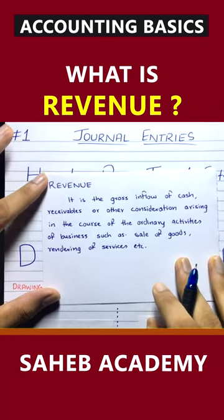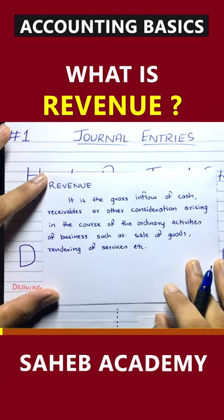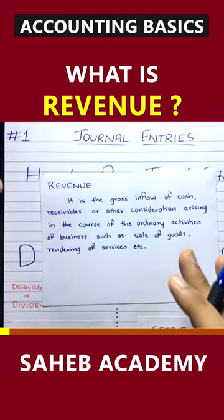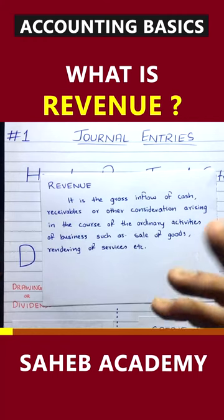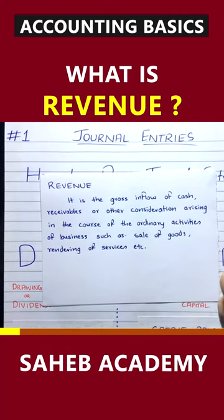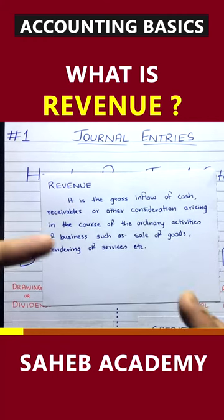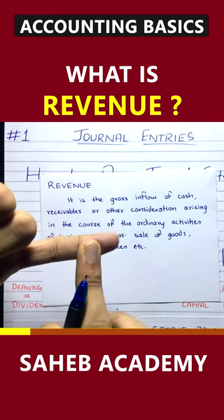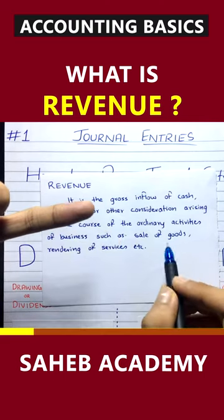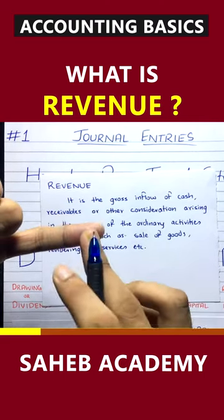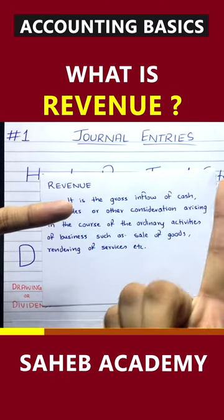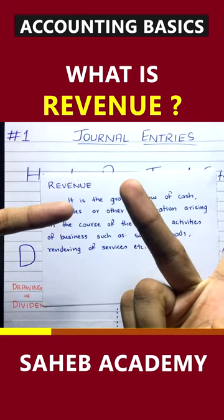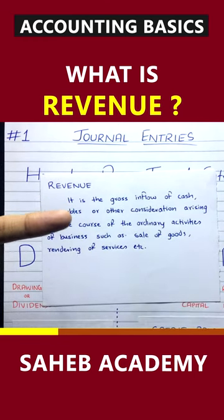Revenue means income — how do you earn the money in business? You make sales, that's how you earn the money. You sell goods or services, and that can be on a cash basis as well as on a credit basis.